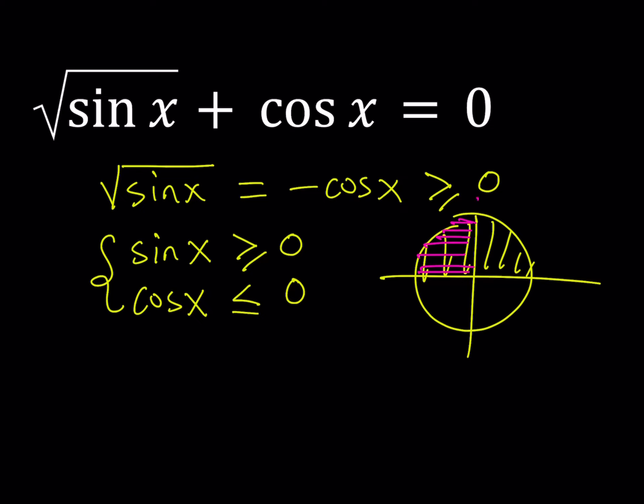So we're basically looking at the x values in the second quadrant, meaning they're going to be between 90 degrees and 180 degrees. Let's go ahead and proceed with the solution.